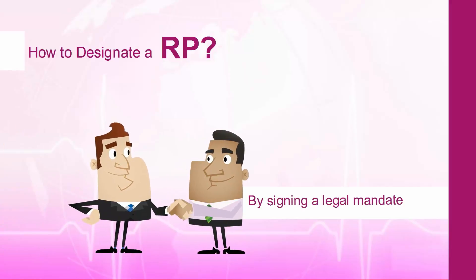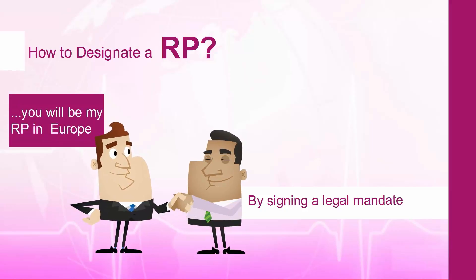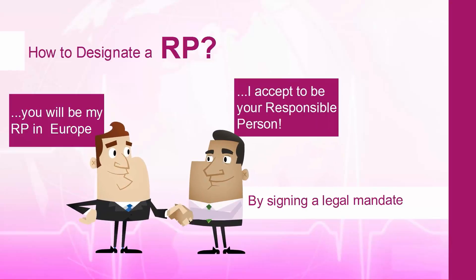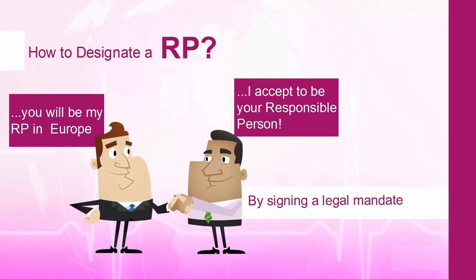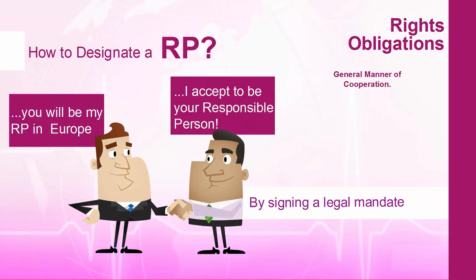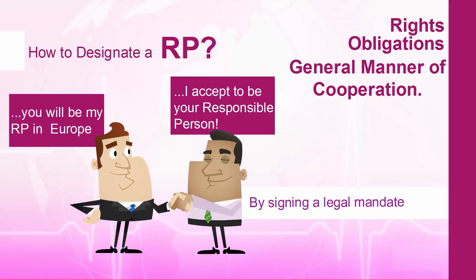The manufacturer and the RP sign an agreement which essentially says: manufacturer, you will be my RP in Europe; European responsible person, I accept to be your responsible person. In addition, the agreement must mention the rights and obligations of each party and the general manner of cooperation. It is clear that designating an RP is legally required and is done by signing such an agreement.